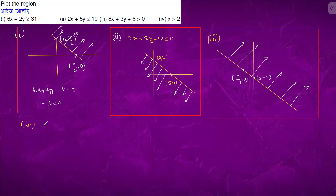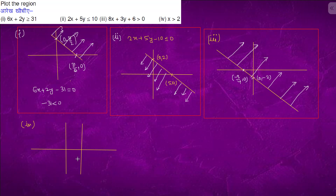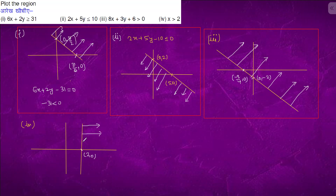This is question number four. We will first plot the coordinate axis. The line is x = 2, so we draw x = 2. The region we want is x > 2.